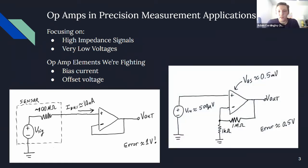Similarly with offset voltage, if you have a signal that's like 500 microvolts or less, and you need to add gain to that circuit to make it a usable signal, you're looking at an error if your offset voltage is on the same order of magnitude as the signal. Many op amps can have even a couple millivolts of offset voltage, which will show up as an error in your measurement.